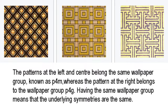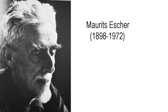The variety of tilings on display at the Alhambra certainly impressed and entranced the Dutch artist Moritz Escher, who first visited the Moorish Palace as a young man in 1922, before returning for a lengthier stay in 1936. He spent days sketching the tilings and taking notes until he became completely obsessed with the idea of tessellations. Afterwards he wrote: "It remains an extremely absorbing activity, a real mania to which I have become addicted and from which I sometimes find it hard to tear myself away."